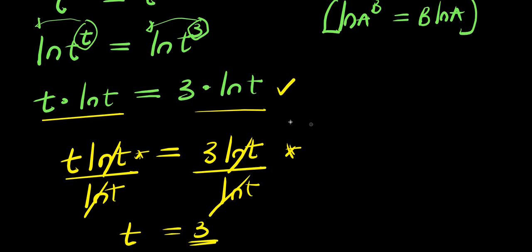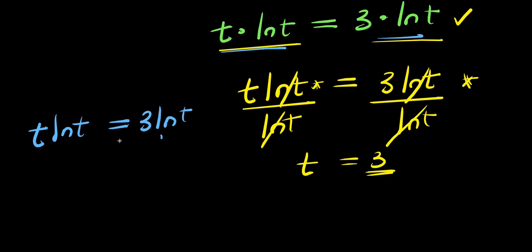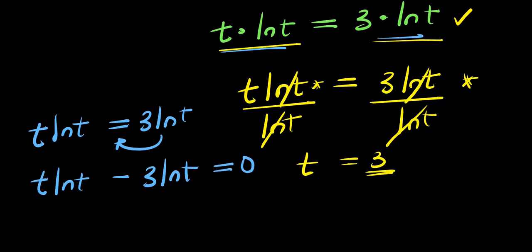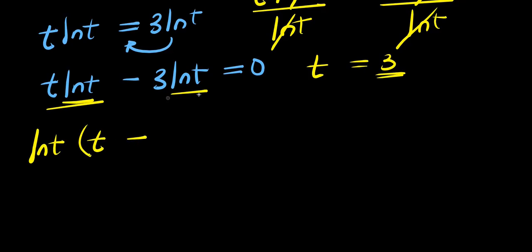I can also solve this in another way. Starting from t times ln of t equals 3 ln of t, I move the right side over: t ln of t minus 3 ln of t equals zero. Now I have ln of t in both terms, so I can factor it out: ln of t times (t minus 3) equals zero.